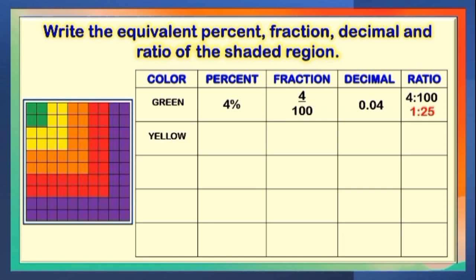The next region is shaded in color yellow. The correct answers are 12%, 12 out of 100, 0 and 12 hundredths, 12 is to 100, and the lowest term is 3 is to 25.